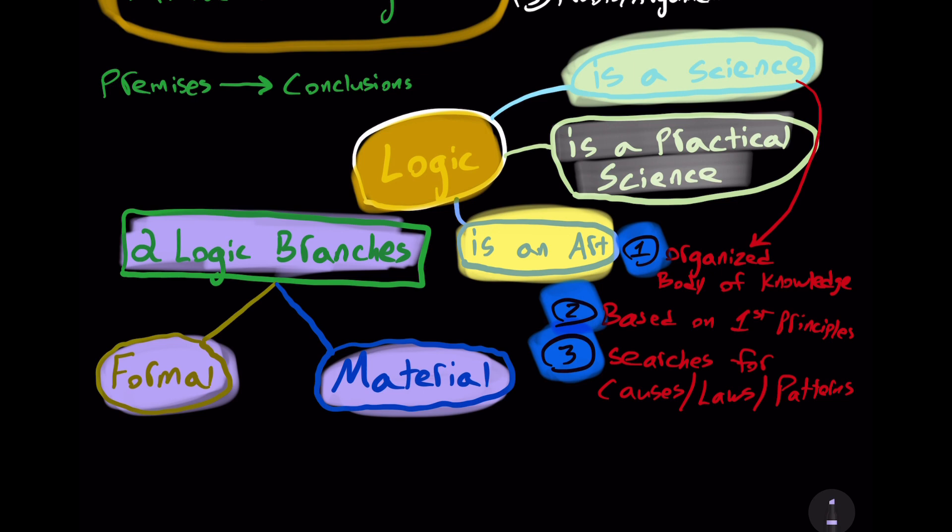A valid argument has it that a derived proposition actually follows from a given set of propositions called premises. So we're dealing with structure or pattern. Consider all P's are M's, no S's are M's, therefore no S's are P's. That's a valid syllogistic structure. That's formal logic.